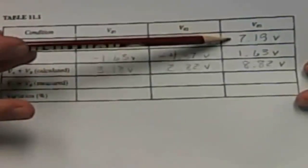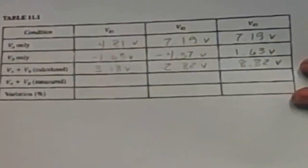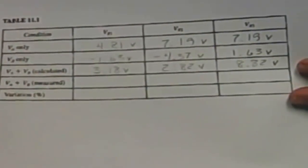And then 7.19 plus 1.63, so I get 8.82. Now I will connect the original circuit, and we're going to measure what really happens when we have both supplies connected.